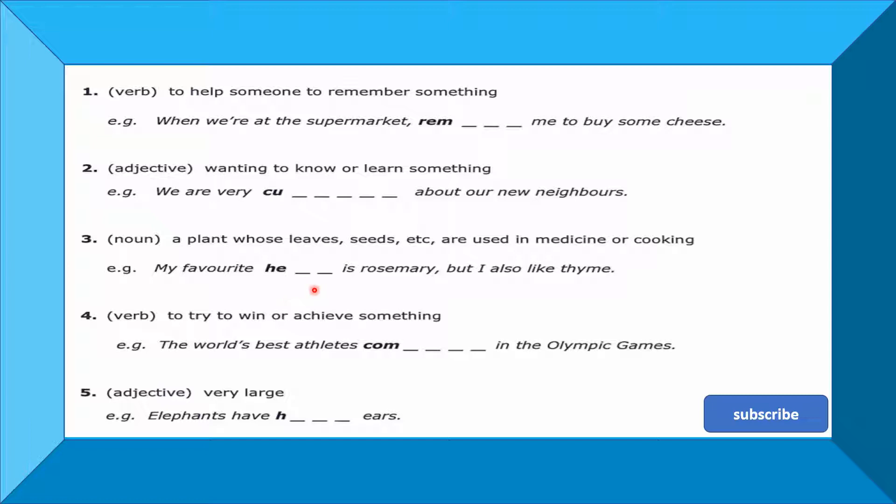Number four, it's a verb: to try to win or achieve something. Achieve means to achieve, try to win means to win, tries to win or achieve something. Example given: The world's best athletes - meaning the most important strong players - compete, meaning they compete in the Olympic Games. They compete here, the word means compete in the Olympic Games. Number five, we are looking for an adjective meaning very large. A very large word. Here we give it in a sentence: Elephants have dash ears. What is the word meaning very large? Very easy, we studied it in the early grades, and students love it. So try. Stop the video, try to find the words. Read and reread, it's very important. Stop the video, read and read and read. This is very important. And try. It's not important that you're right, but it's important that you learn and repeat many times.